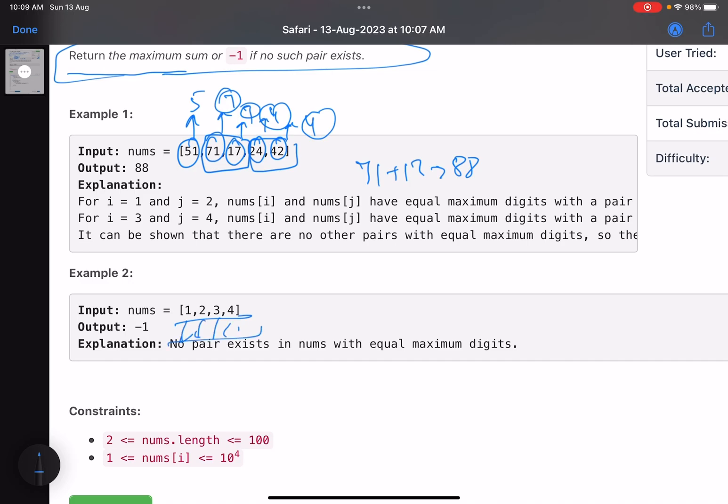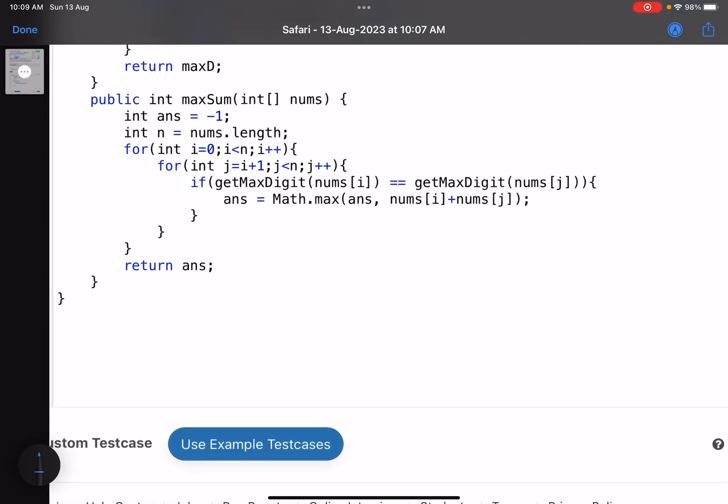Now here, the max digit of every number is distinct, so you cannot form a pair. Hence you return minus one. That is what the problem is asking us to do. Again, an implementation-based problem. Let's see the implementation.